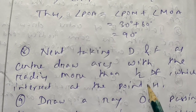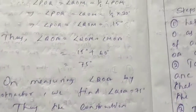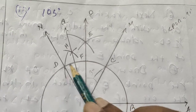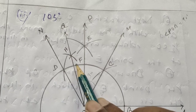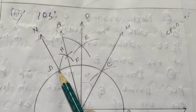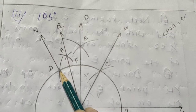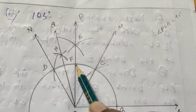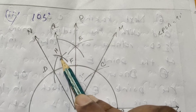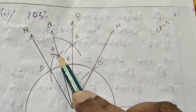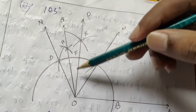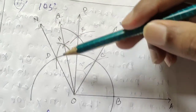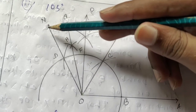Step eight: taking D and F as centers, draw arcs with radius more than half of DF which intersect at point H. Take point D as center with radius more than half of DF and draw an arc. Take point F as center with the same radius and draw another arc. Those two arcs intersect at point H. Then draw ray OQ passing through point H.